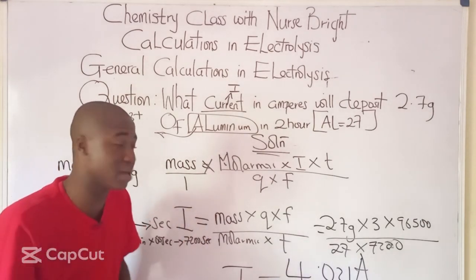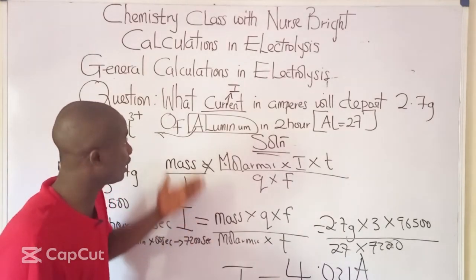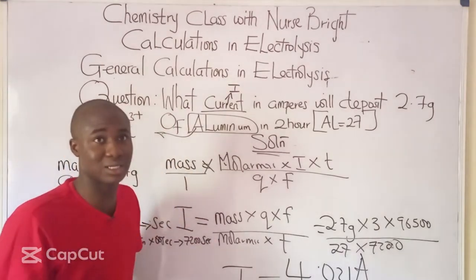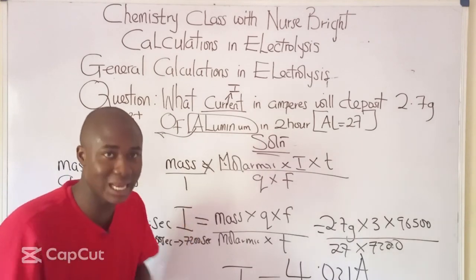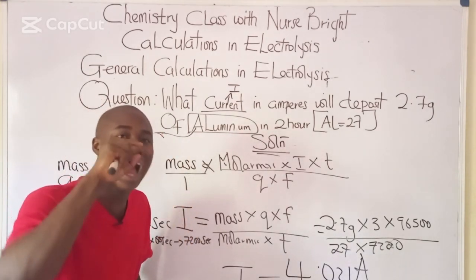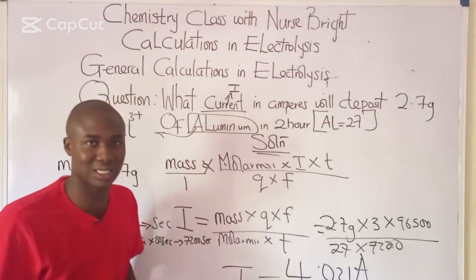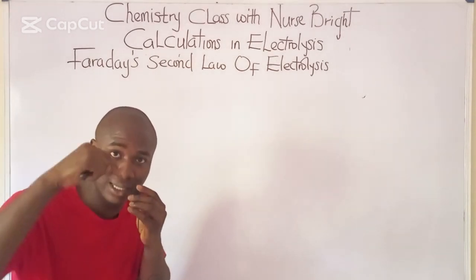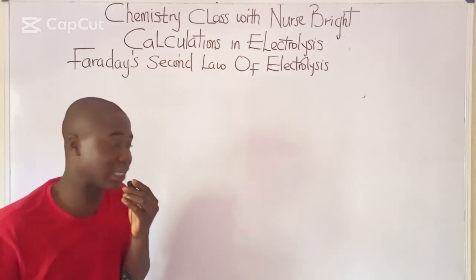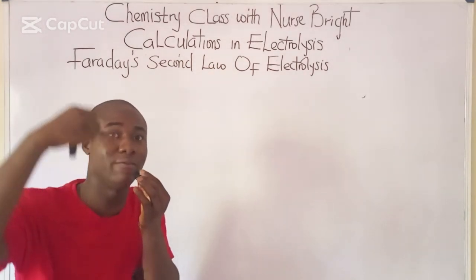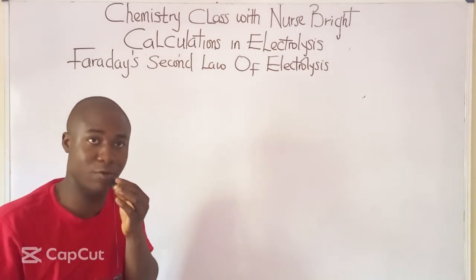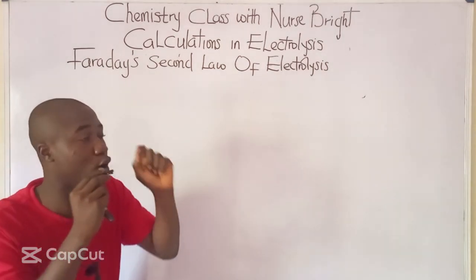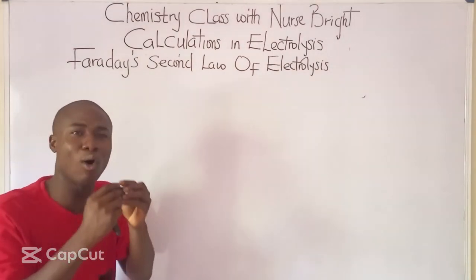Solving questions under this aspect is straightforward if you follow the step-by-step patterns and procedures for deriving the formulas. This is the second aspect under electrolysis calculations — general calculations. Now let us move to the last aspect: calculations for Faraday's second law of electrolysis.